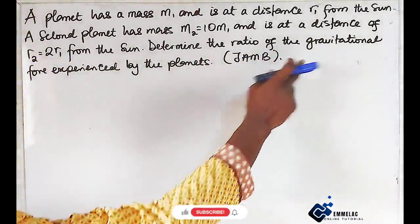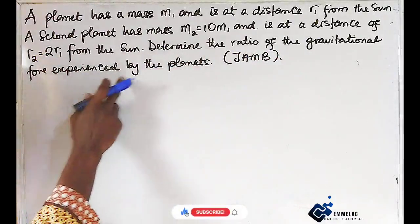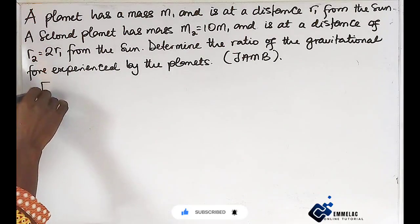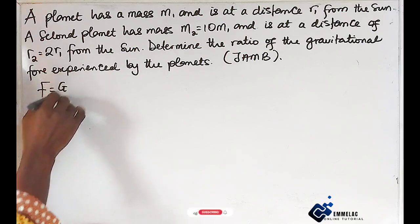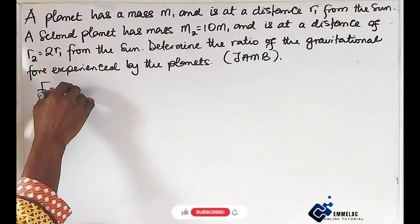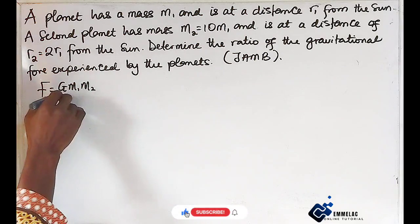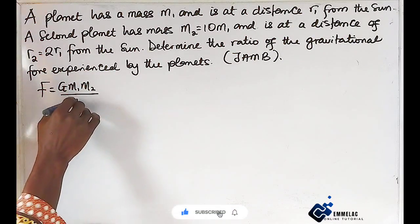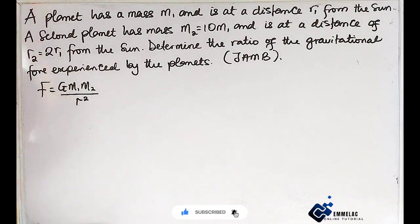Determine the ratio of the gravitational force experienced by the planets. Let's recall that the gravitational force is given by F = Gm1m2/r², where G is the gravitational constant, m1 and m2 are the two masses, and r² is the square of the distance of separation.